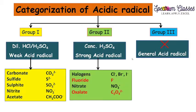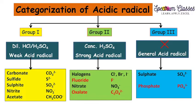Now we are seeing the different acid radicals in each group. In Group 1, there are carbonate, sulfide, nitrite, and acetate. In Group 2, we are having halogens, nitrate, and oxalate. In Group 3, we are having sulfate and phosphate.